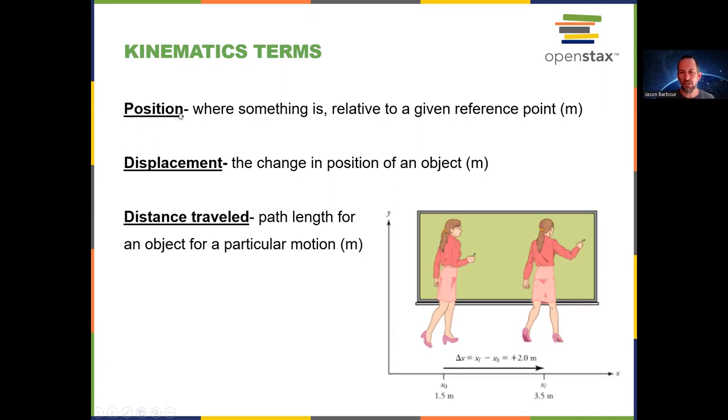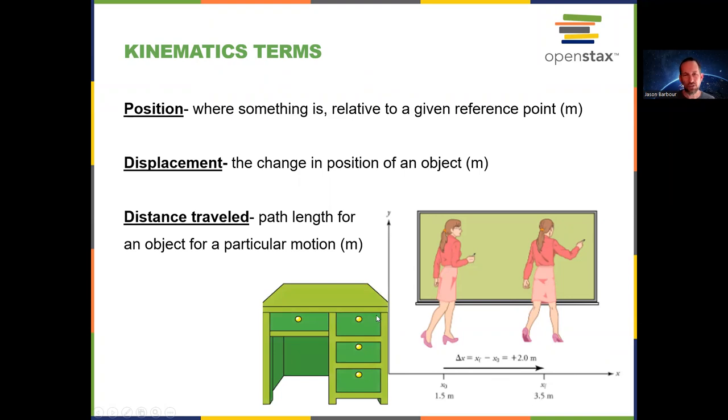All right. Now into the terms. Position is an example of a vector. It's where something is relative to a given reference point. So, for example, we have our teacher here and she has an initial position, which is X sub zero, meaning at time zero, and a final position at X sub F. Now, why is her initial position 1.5 meters and not zero? Well, it's relative to a given reference point. So my interpretation is maybe she's 1.5 meters away from her desk. That's where she started. The desk is easy to measure from, so we'll use that as our reference point.